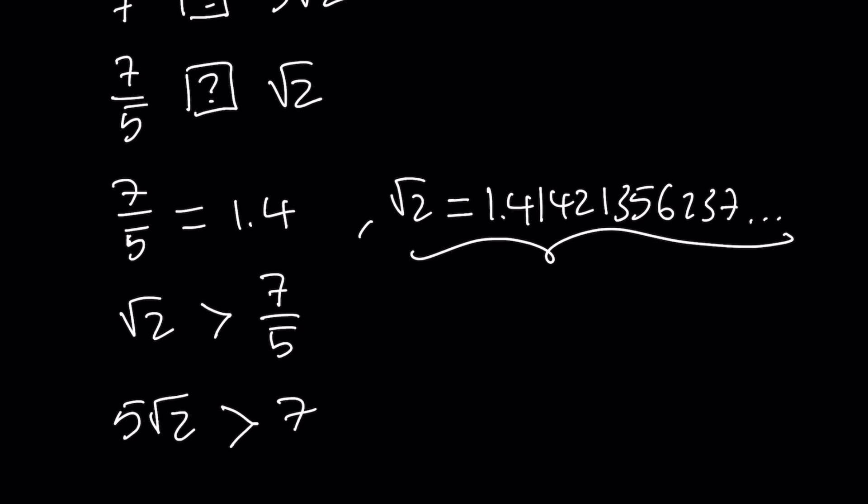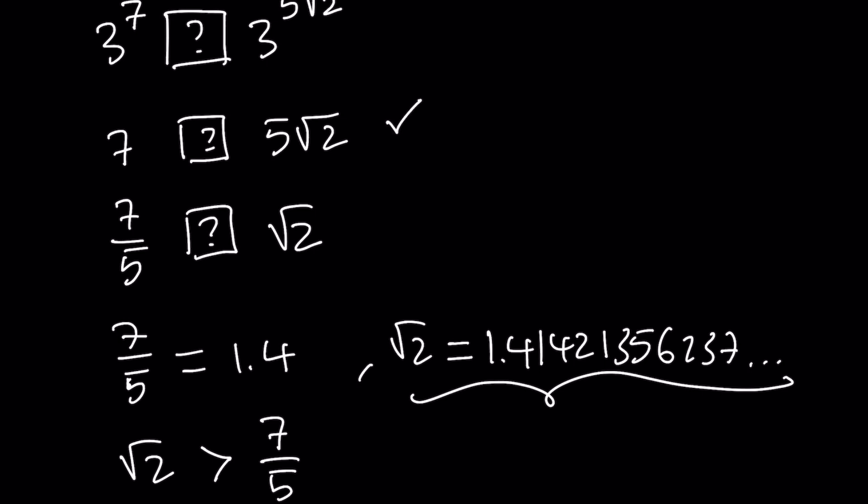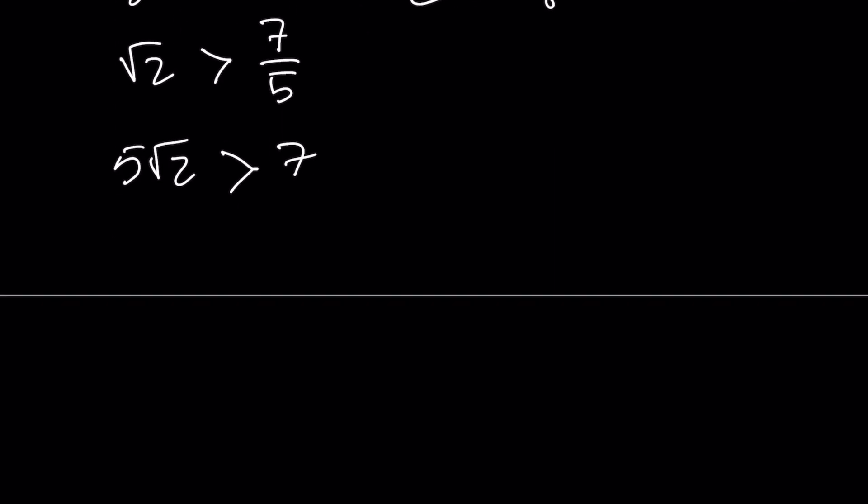Great, awesome. This is nice, because remember, we were trying to compare these two because we wanted to compare two powers of 3. Now, since 5 root 2 is greater than 7, I can safely say that 3 to the power of 5 root 2 is greater than 3 to the power 7.